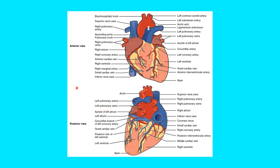Looking at the surface features in this diagram, the auricles are these little flaps you notice — they're actually part of the atrium. The coronary sulcus is this groove where the blood vessels lie. You can see the anterior interventricular sulcus with major blood vessels in it, and on the back side, the posterior interventricular sulcus.